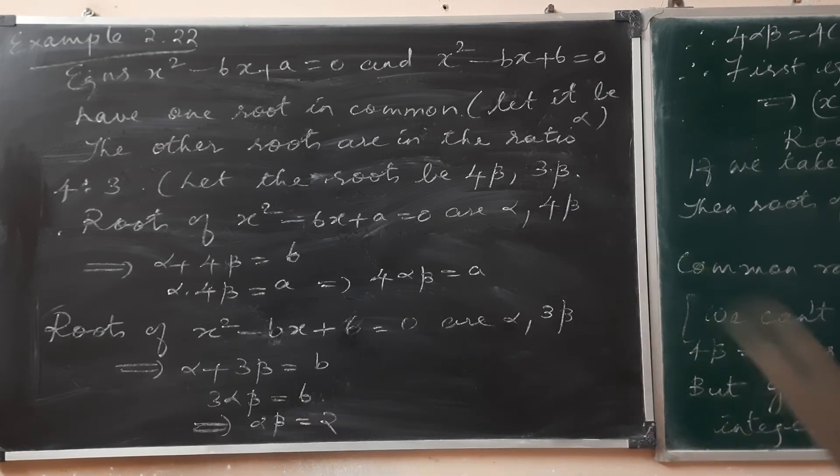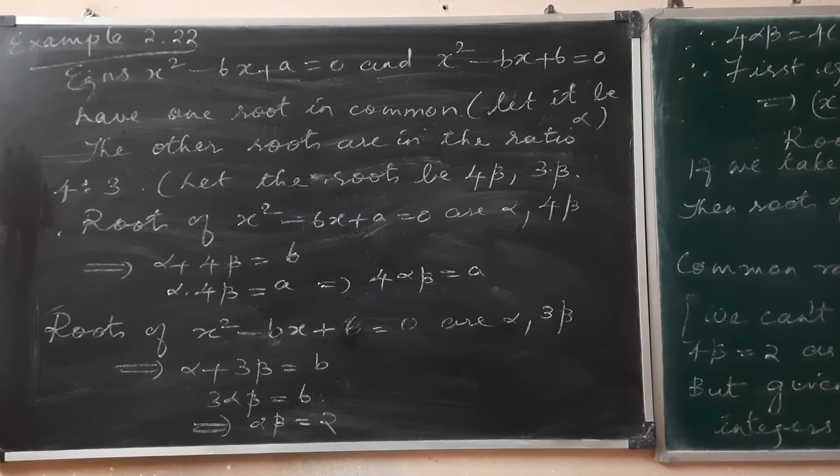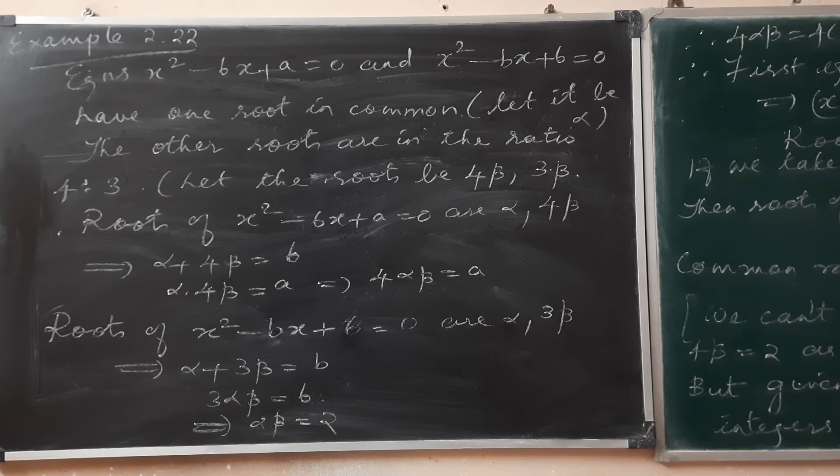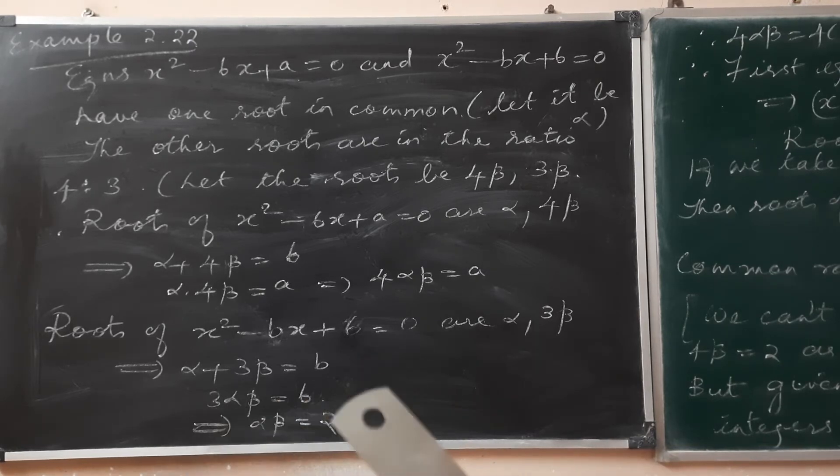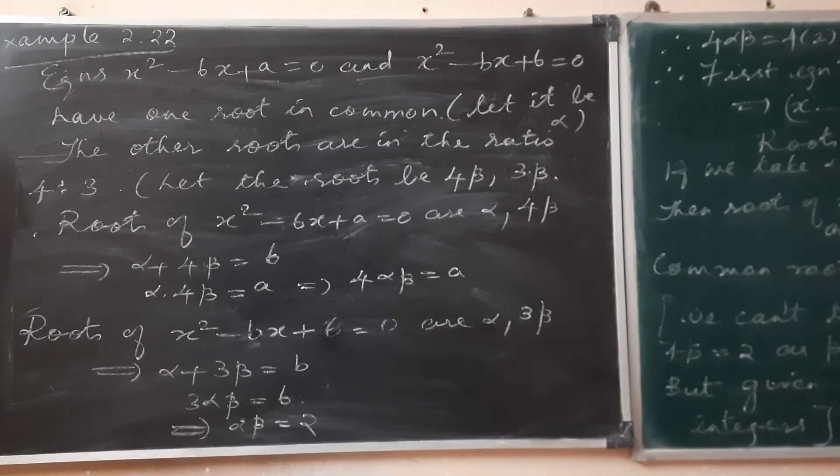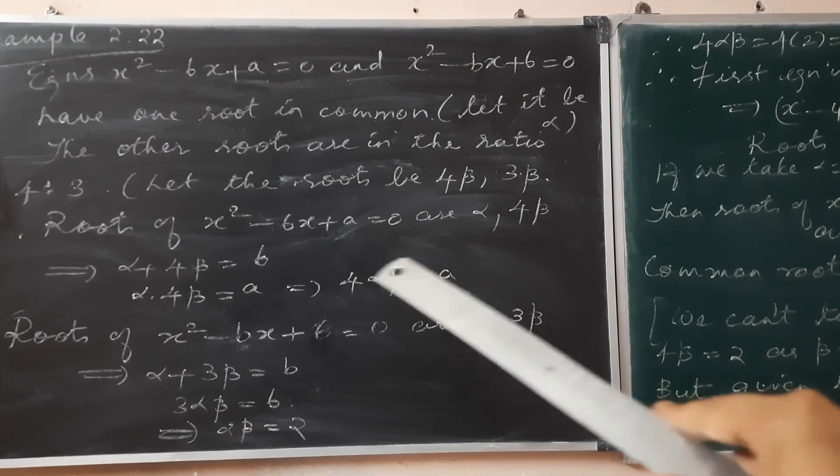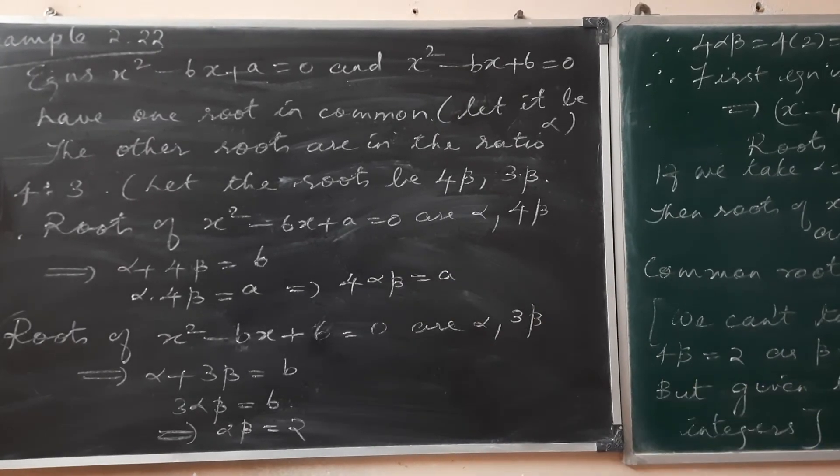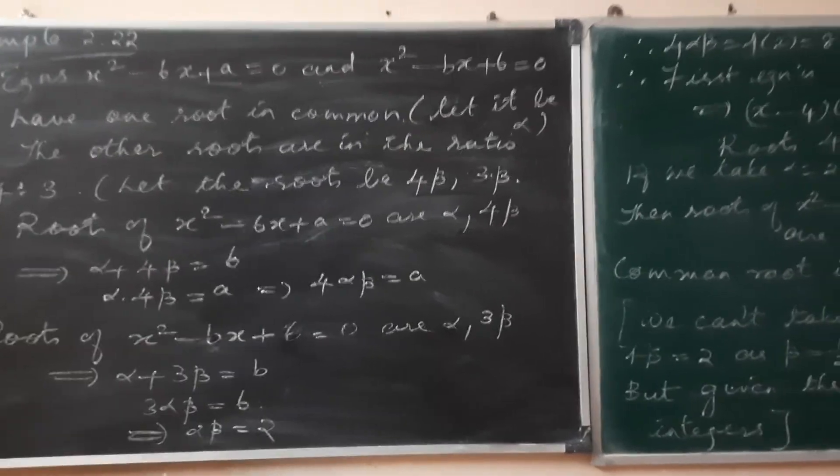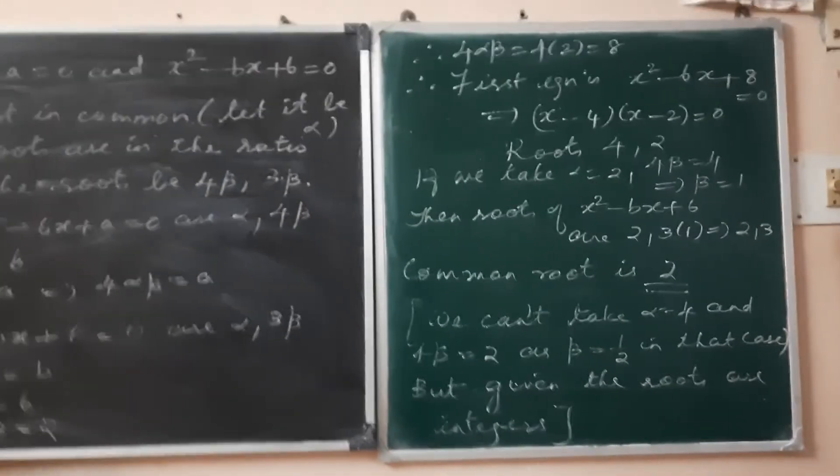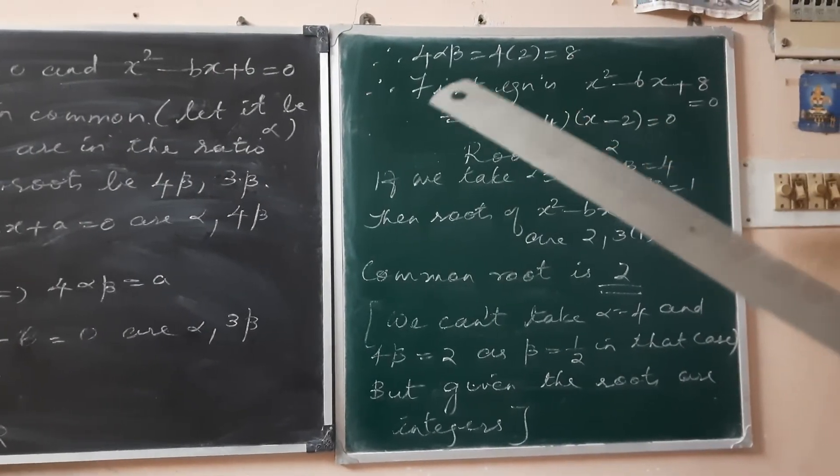For the second equation with roots α and 3β, we have α + 3β = b and 3αβ = 6. From 3αβ = 6, we get αβ = 2. So the value of a is 4 times 2, that's 8.